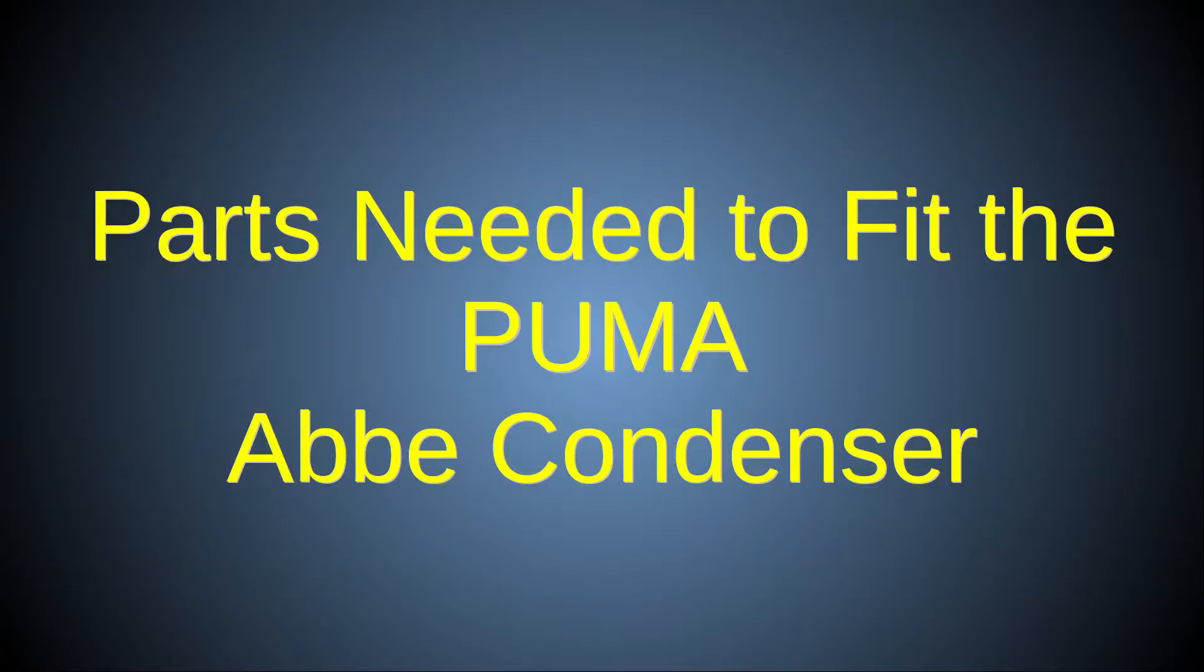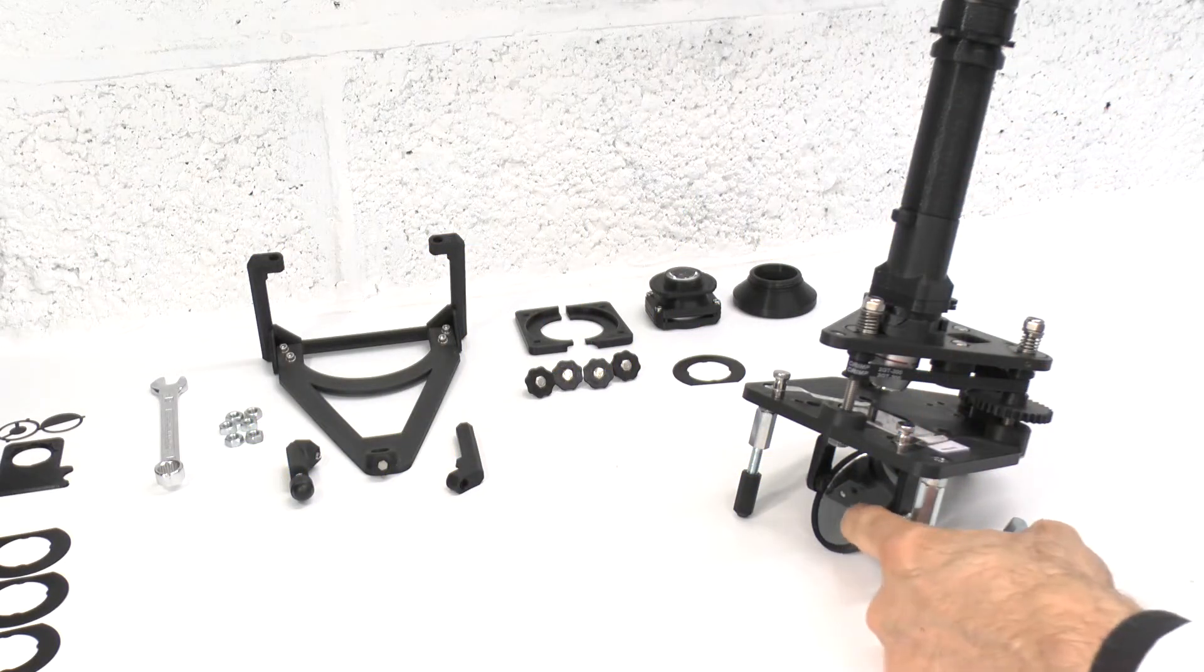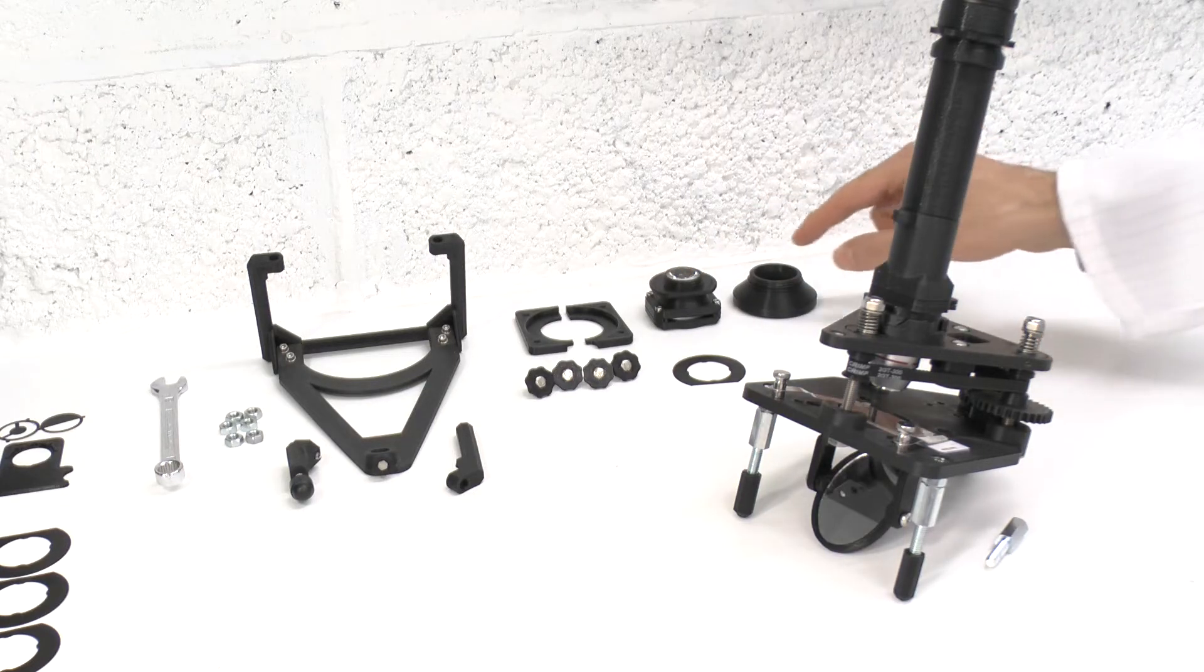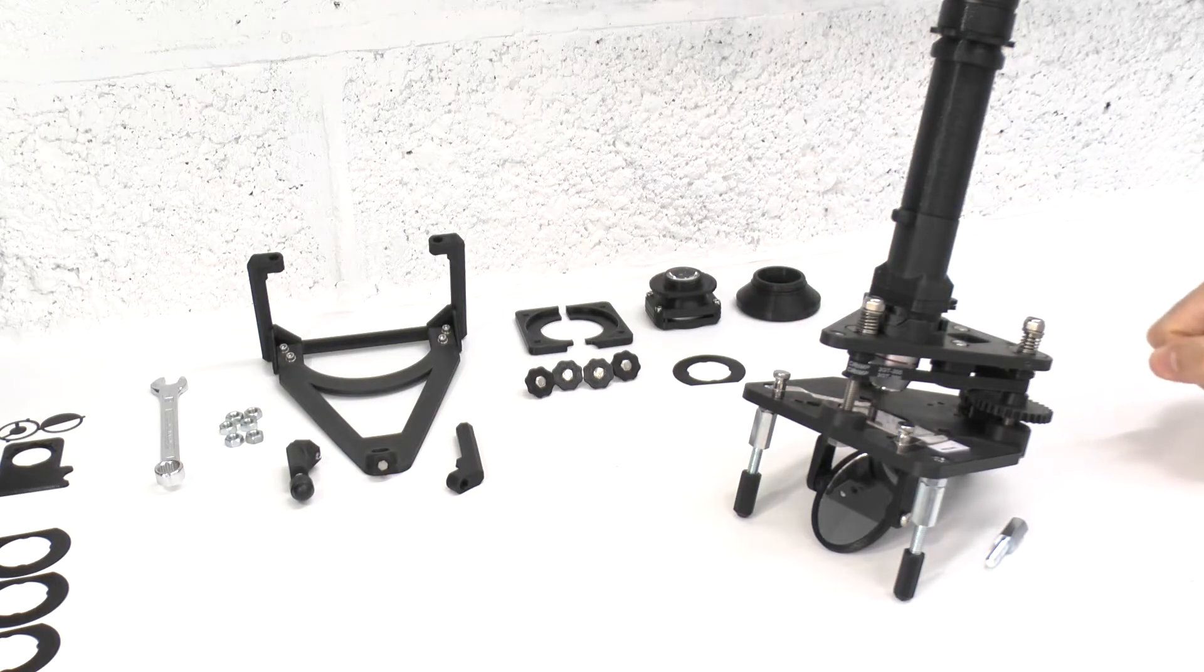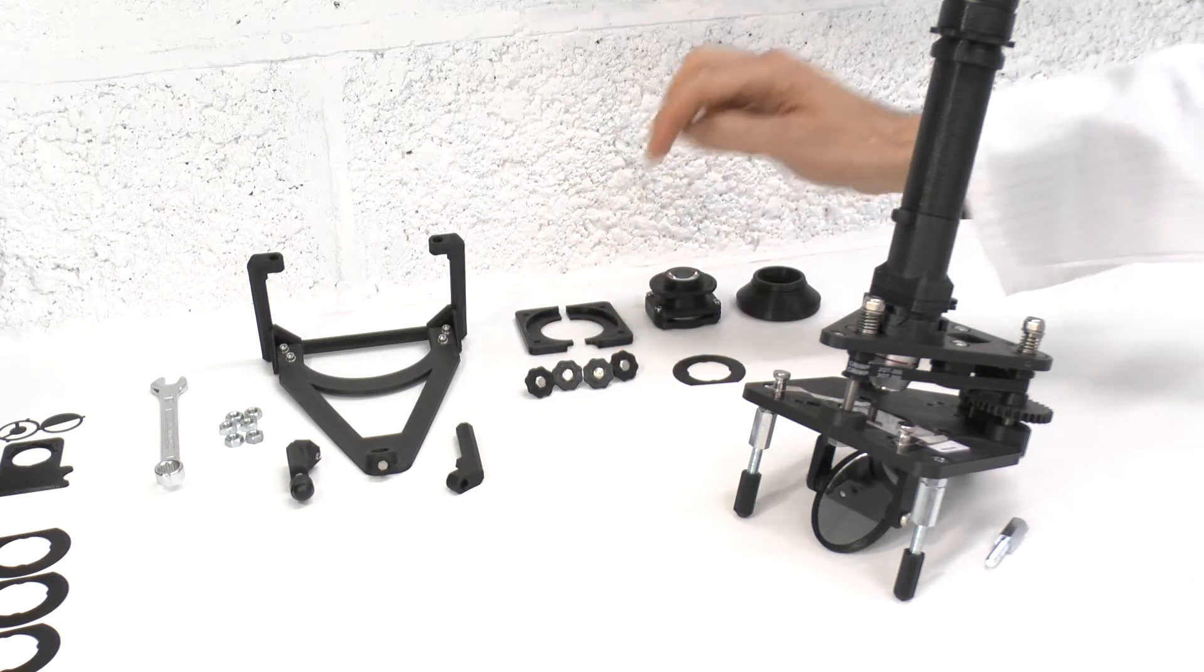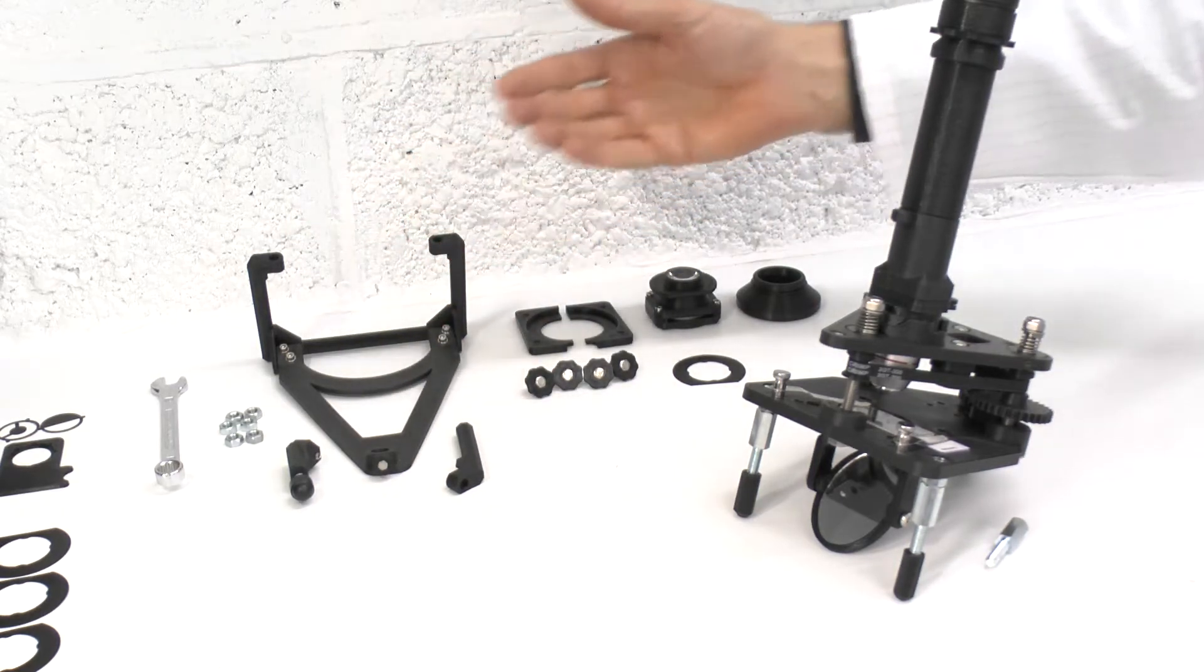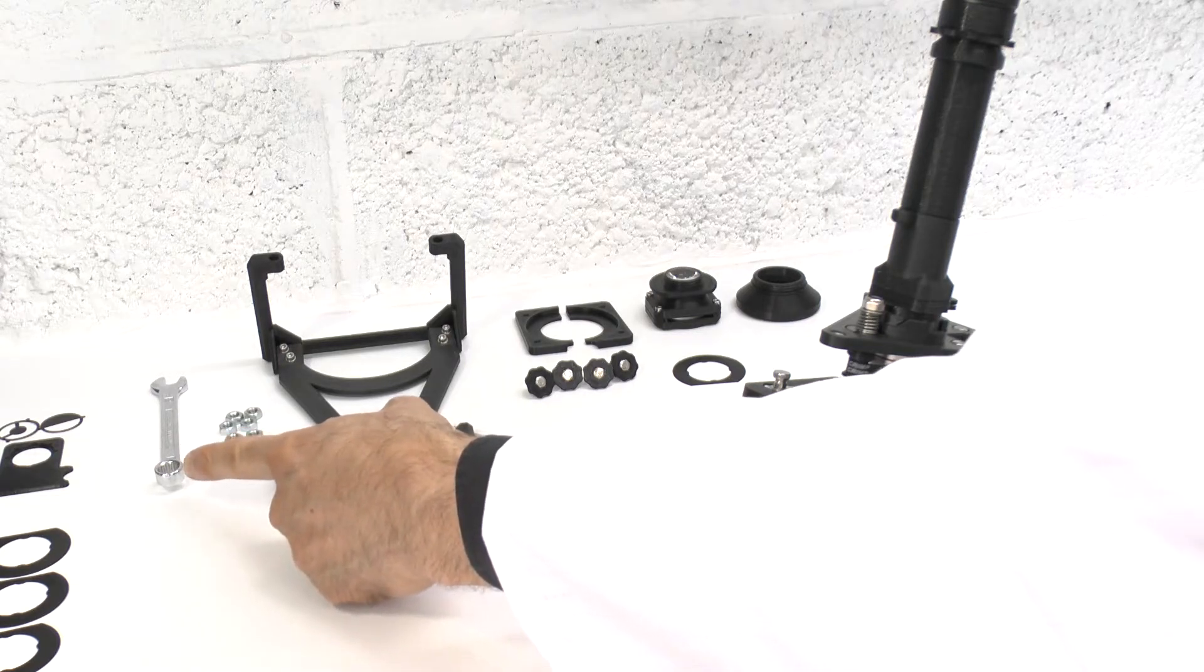To upgrade a Puma foundation scope to use a condenser, we will need the Puma foundation scope with its original mirror illuminator, the Puma Abbe condenser module, and the condenser to mirror holder socket adaptor, the substage condenser gripper brackets and four M4 thumbscrews, and the long legs stand system because once the condenser is added, the short legs system will no longer provide sufficient clearance. Also, a 10mm spanner may help to fix this securely.